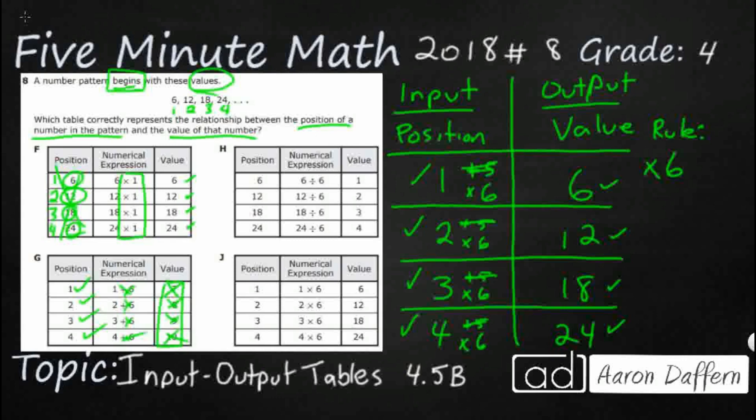H is just wrong on both ways. They actually flipped both of these. If they could have flipped those and did a multiply, we would be good. But they did the inverse, and they used division, which leaves us with J. Positions are good. Rule is good times 6. Values are good. Our answer is J.